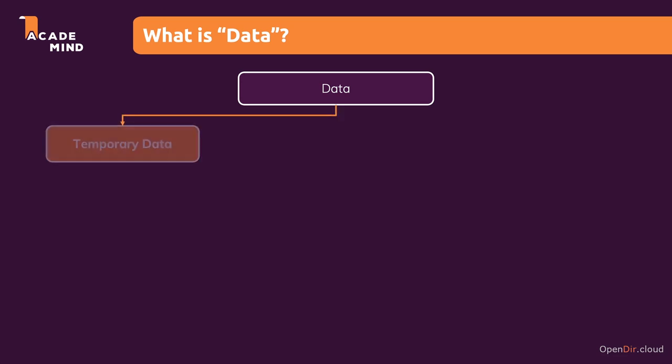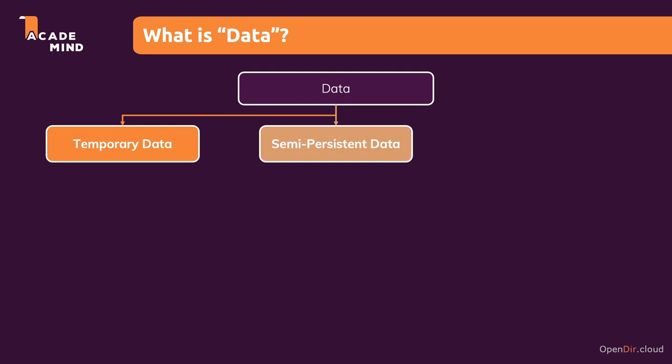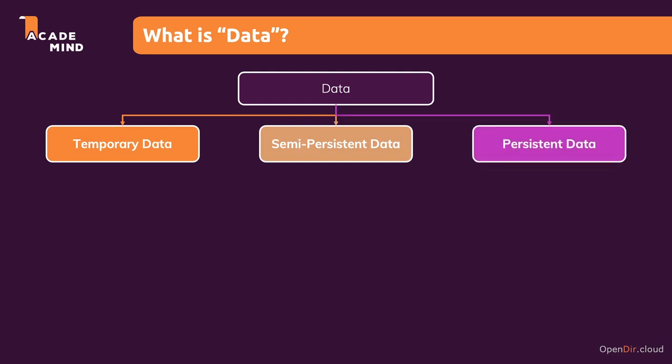But we can actually differentiate between different kinds of data. For example, there is temporary data, semi-persistent data, and persistent data. These are not official classifications — just some different categories I came up with — and I'm going to explain which kind of data goes into which category. Let's start with temporary data.